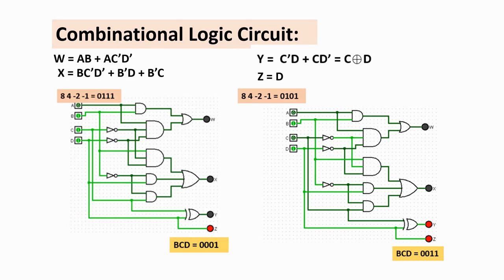The circuit diagram was developed using LogiSim software, but it can also be drawn manually. This is the combinational circuit diagram for the code converter. For W = AB + AC'D': AB is implemented with a two-input AND gate. AC'D' is implemented with a three-input AND gate. These two AND gate outputs are combined with an OR gate to produce W.